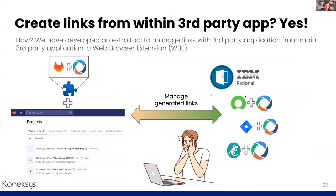We are not limited to creating links only in DNG or other OSLC-enabled applications. We have developed an extra tool — a web browser extension — which allows managing links in third-party applications directly from those applications. Using the previous GitLab example combined with this extension, we can create, delete, and edit links generated with IBM ELM tools or any other OSLC-enabled application such as ServiceNow, Jira, and Code Beamer.